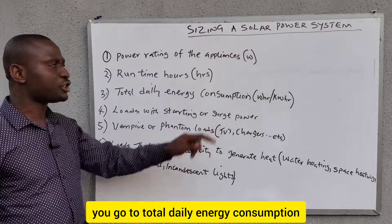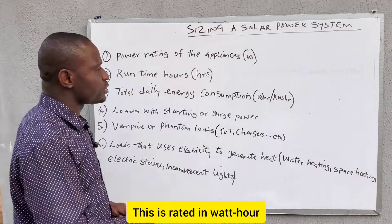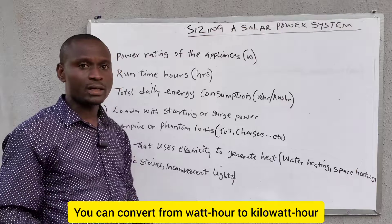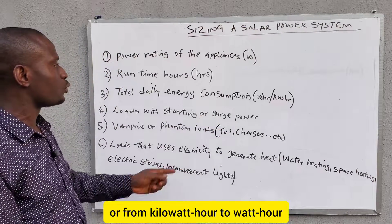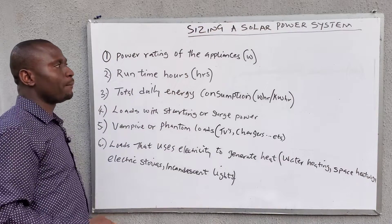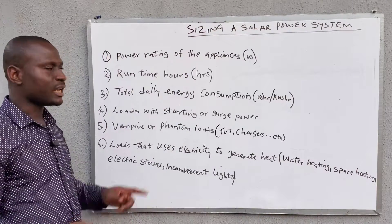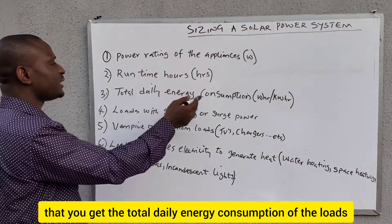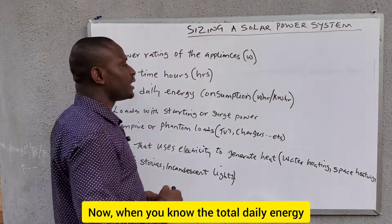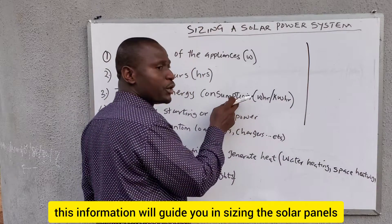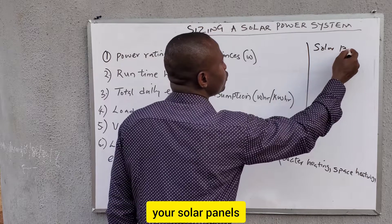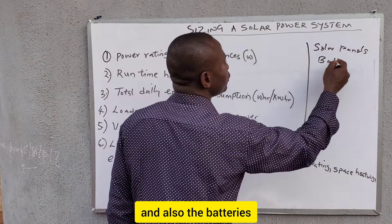After knowing the runtime hours, you calculate the total daily energy consumption, which is rated in watt-hours or kilowatt-hours. You can convert between the two. It is from the power of the appliances and the runtime hours that you get the total daily energy consumption of the loads. This information will then guide you in sizing the solar panels and the batteries.